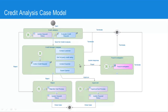Once all of this has happened, the credit manager has the ability to approve the application, in which case we move to the approved state and run the relevant sub-processes to provision the card to the customer, or we go to the reject state whereby we run the sub-processes for rejection.